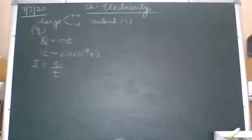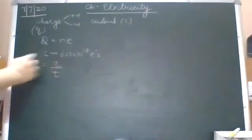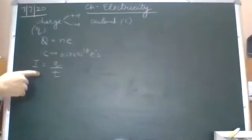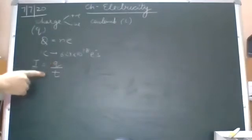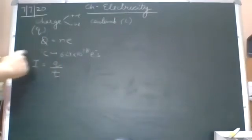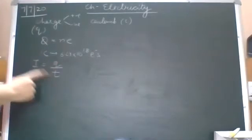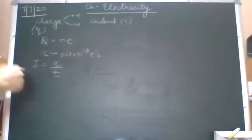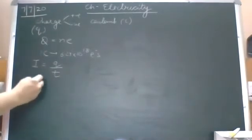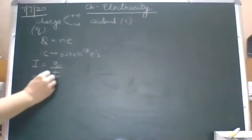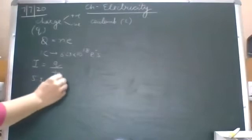So proceeding: I is Q by T. This we had discussed in both the sections. Current is defined as charge flowing per unit time. There are three variables in the formula: I, Q, and T. Any two will be given to you and you calculate the third. And current — we had defined the unit: ampere.